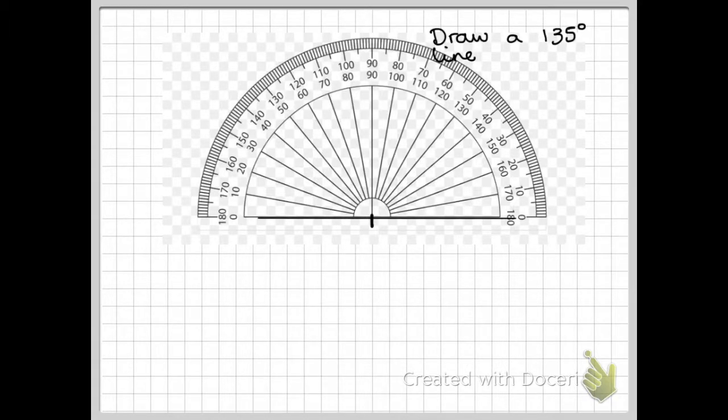This time I'm going to come from the right side, and I'm going to look at this zero, the outside numbers. So there's 10, 20, 30, 40, 50, 60, 70, 80, 90, 100, 110, 120, 130. There's 135.